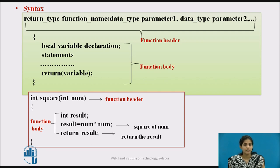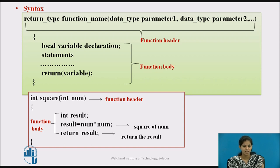Let us write the function definition for calculating the square of a number. First we define the function header: the return type is integer, the name of the function is square, and it takes one parameter of type integer. Then we open the function body. In the function body, we first declare one local variable result to store the result of the square. After that we calculate the square of the number, store it in result, and use a return statement to return the value to the calling function.